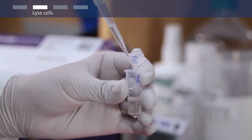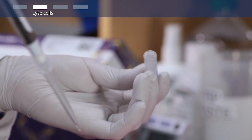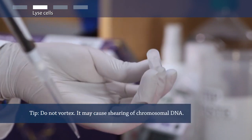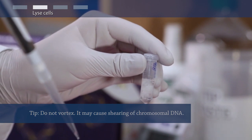Now add 350 microliters of neutralization solution. Mix immediately and thoroughly by inverting the tubes four to six times. The neutralized bacterial lysate will become cloudy.